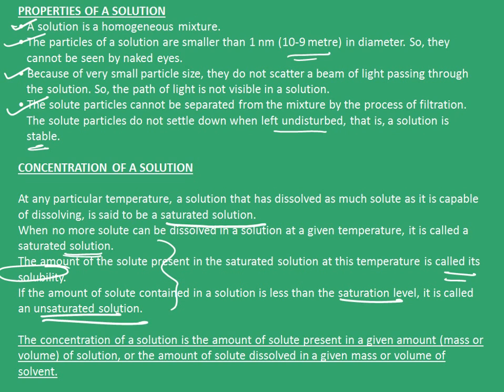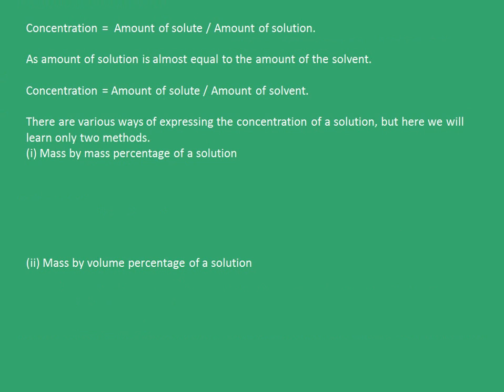So these three things have to be remembered. The concentration of a solution is the amount of solute present in a given amount — by mass or volume — of solution, or the amount of solute dissolved in a given mass or volume of solvent. Concentration is the amount of solute divided by the amount of solution, or equivalently, amount of solute divided by amount of solvent. There are various ways of expressing concentration, but here we will learn about two methods: mass by mass percentage and mass by volume percentage.